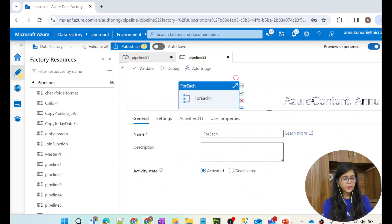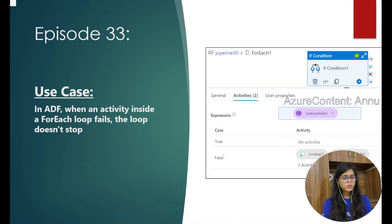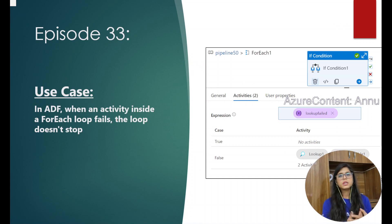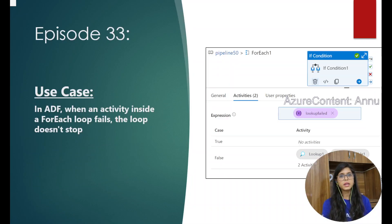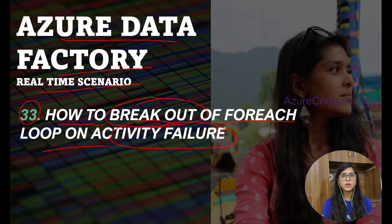That's what our requirement was — to break out even if there is one activity failure. This is how we can break out of a ForEach loop on activity failure in ADF using the If activity and Set Variable activity together. That's it for this video. I hope you liked it — please hit the like button and subscribe to the channel if you haven't yet. Thank you, please stay tuned.